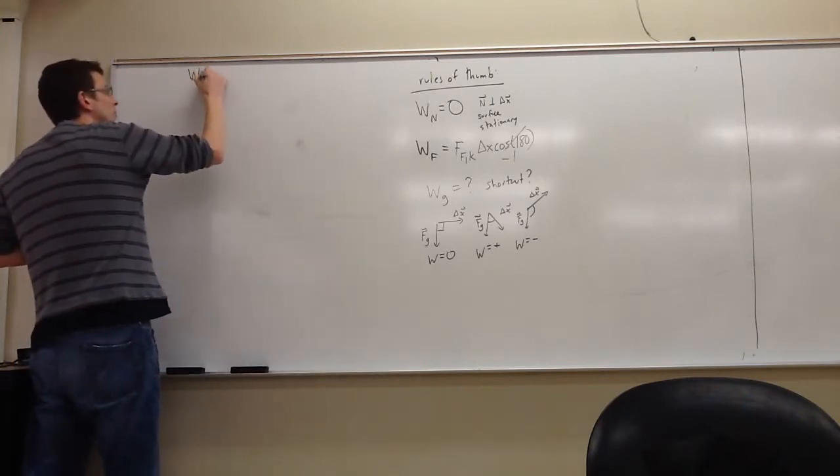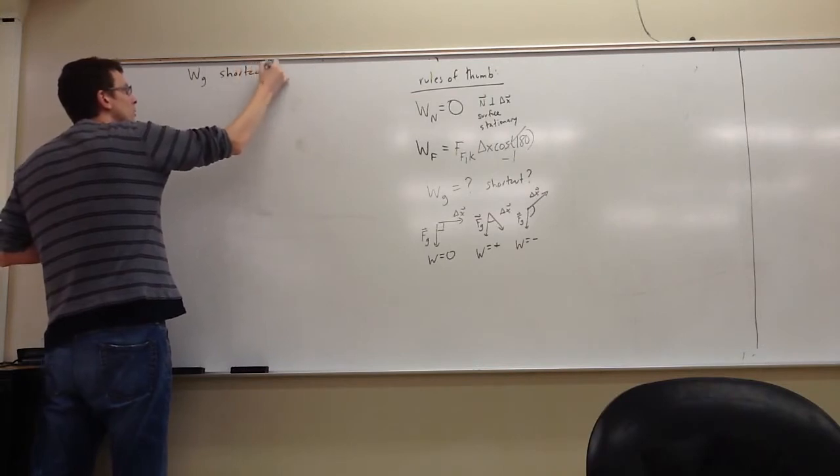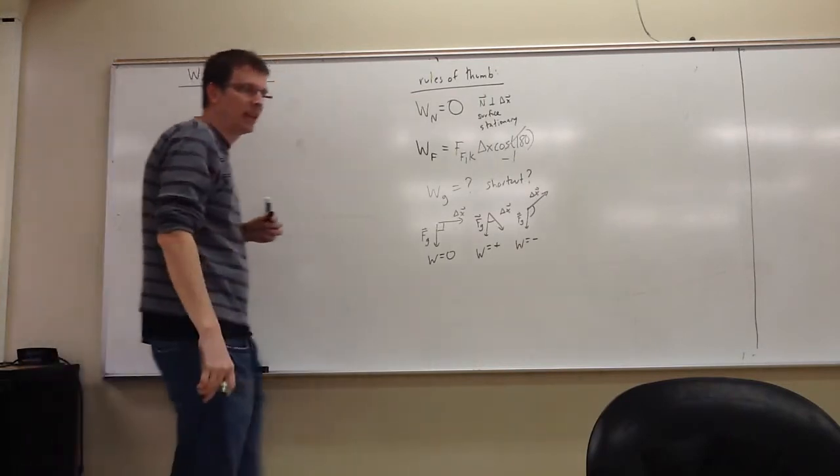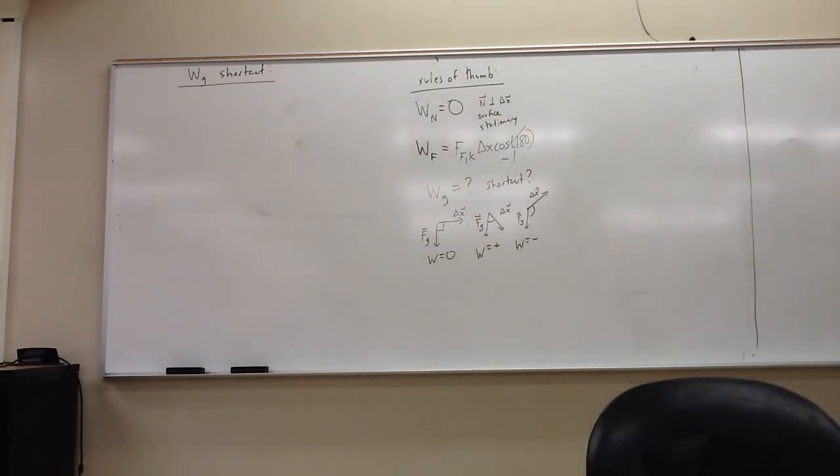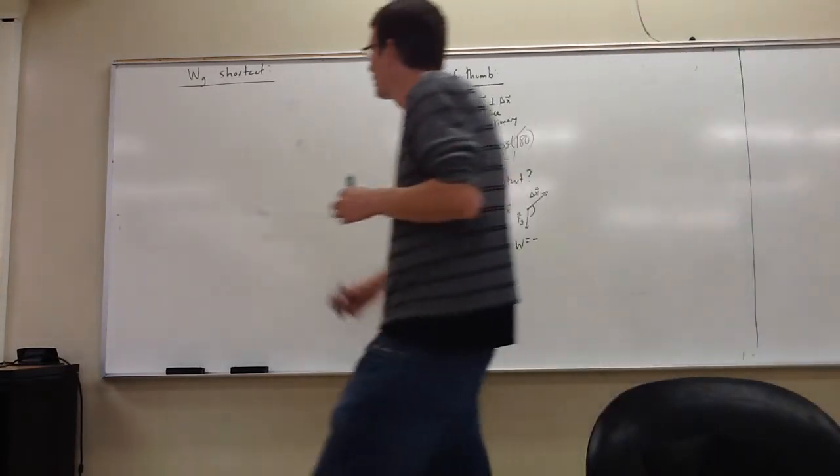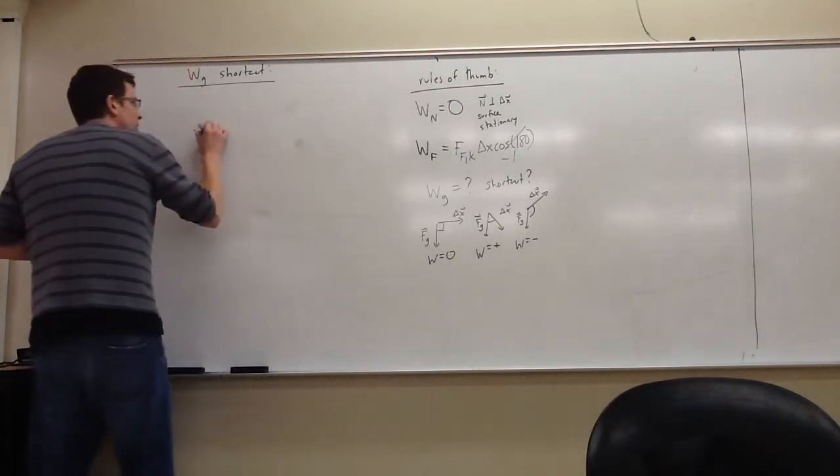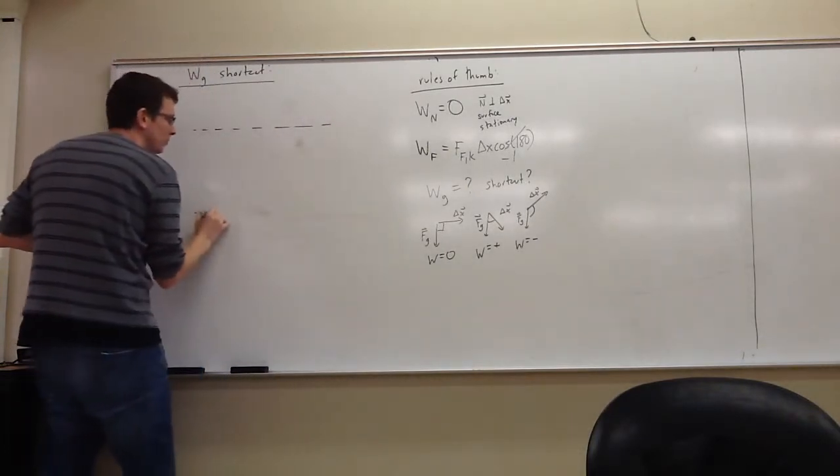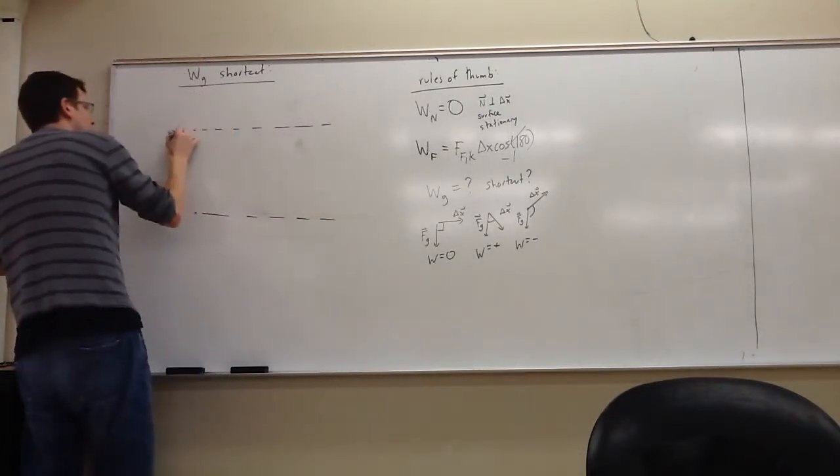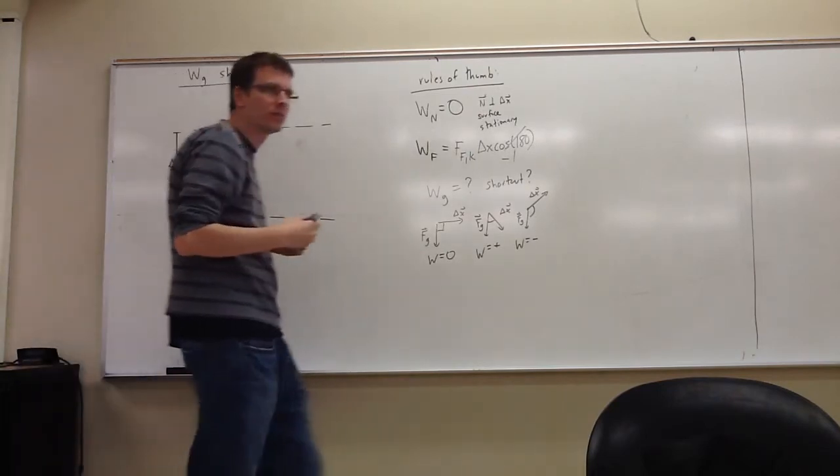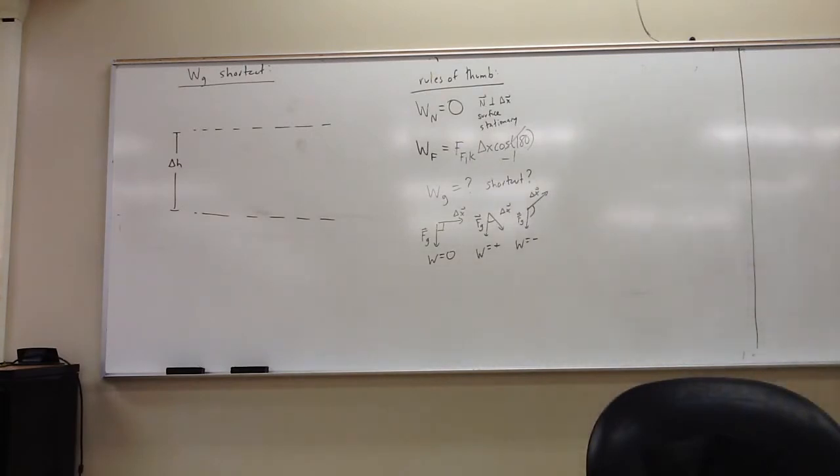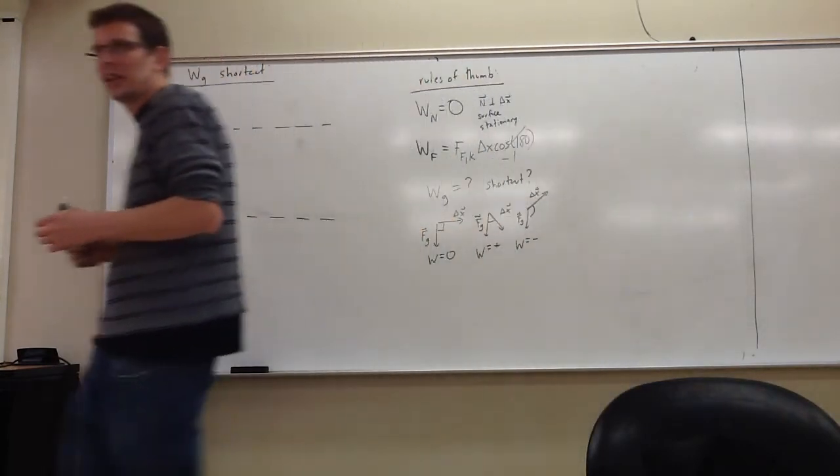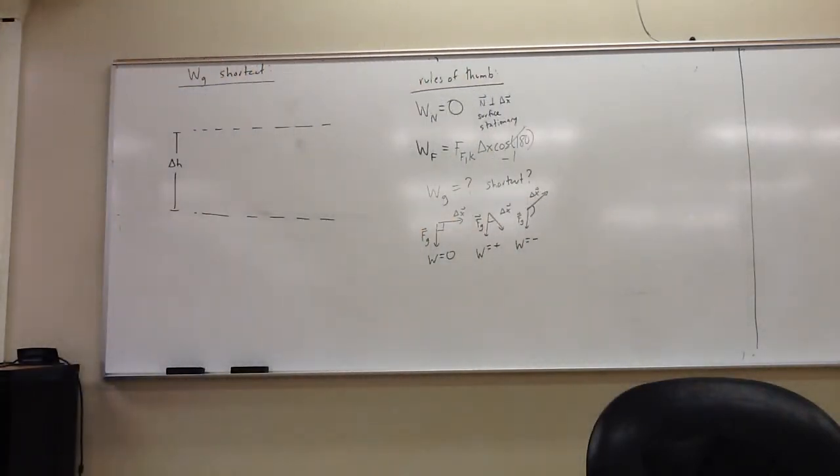So I'm going to develop a work done by gravity shortcut. It's going to be a big shortcut. You'll be surprised at how easy it is to compute the work done by gravity in any situation. Here's what I'm going to do. I'm going to mark off two heights. I'm going to call the difference between them delta H. So that's the height difference between them. And what I'm going to do is I'm going to take a look at several different ways that I could get between these two heights.